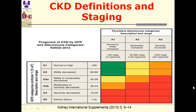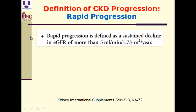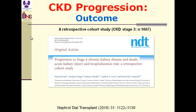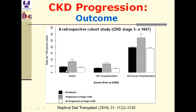Progression of chronic kidney disease is worsening of staging from one stage to a higher stage. Rapid progression is defined as a sustained decline in estimated GFR of more than 5 mL/min per year. A retrospective cohort study of patients in stage 3 showed that progression to stage 4 correlates with poor outcomes: death increases, acute kidney injury increases, and all-cause hospitalization increases. So if there is progression, there is worsening of outcome.